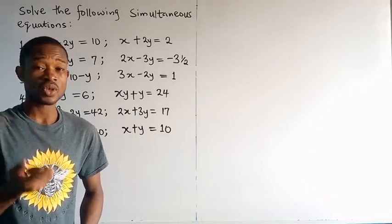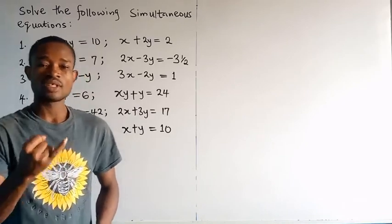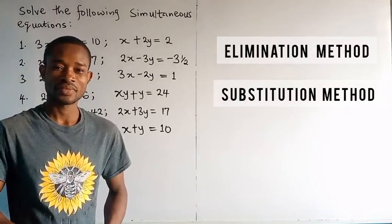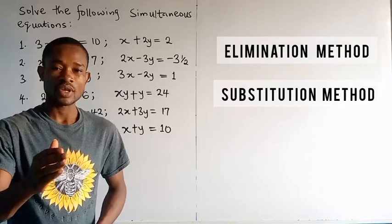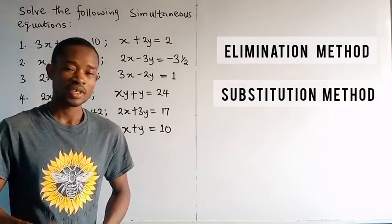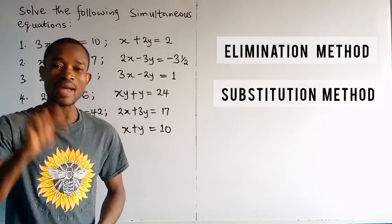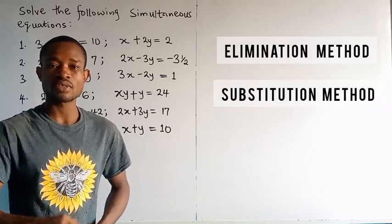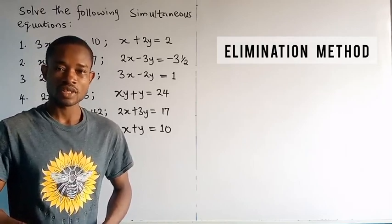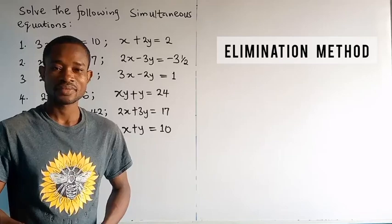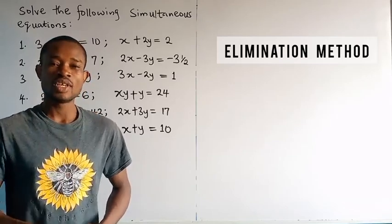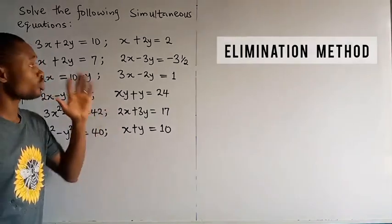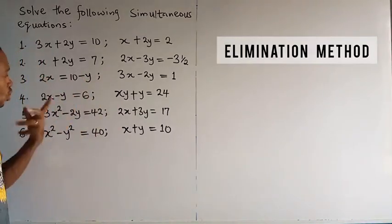There are two methods we use in solving simultaneous equations. One is the elimination method; the other is the substitution method. When solving problems, you have the choice of using either method, except if your examiner demands a particular one. In this class, we are going to focus on using the elimination method to solve simultaneous equations.